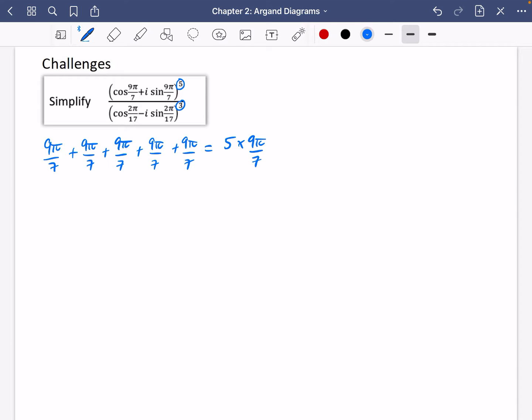So let's actually just see if we can simplify what that first line should be. That first line would therefore simplify to the cos of five multiplied by nine pi over seven. That's 45 pi over seven, plus i sine 45 pi over seven.